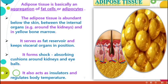Next one: adipose tissue. Adipose tissue is basically an aggregation of fat cells or adipocytes — small molecules deposited in one or more places. The adipose tissue is abundant below the skin, between the internal organs, around the kidneys, and in yellow bone marrow.